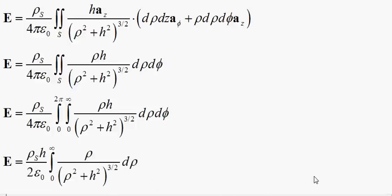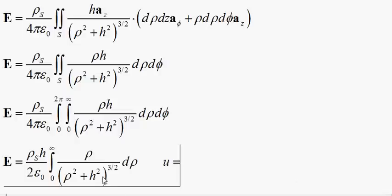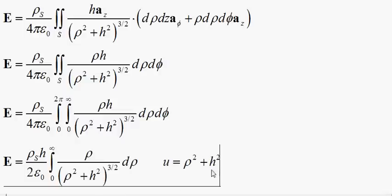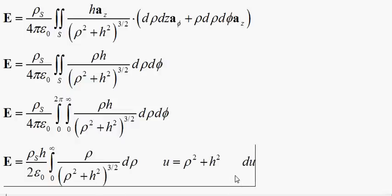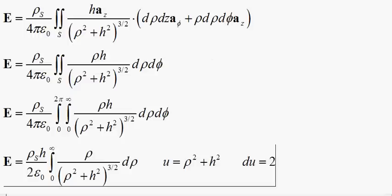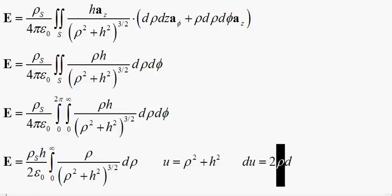We can factor out H, because that's constant. Then we simply do a u-substitution: u is equal to rho squared plus H squared, and du is equal to two rho d-rho.